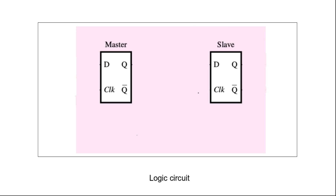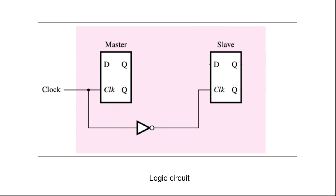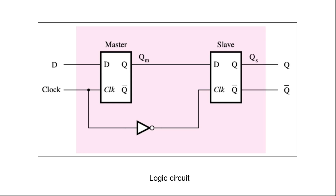The clock input is connected to the master D latch. We invert the clock signal and connect it to the clock input of the slave D latch. The Q output of the master D latch is connected as the D input of the slave D latch. The D input of the flip-flop connects to the D input of the master, and the Q output of the slave D latch serves as the Q output of the flip-flop.